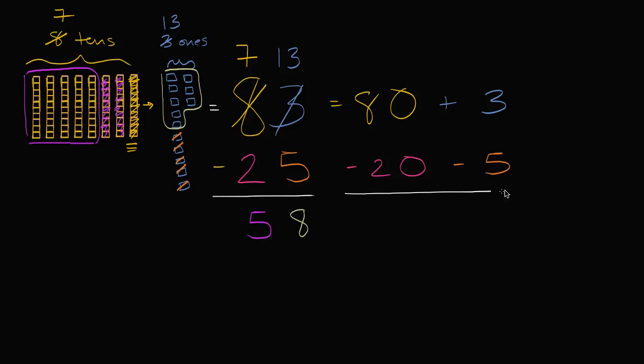We subtracted 20 and we subtracted five. When we tried to take five 1s from three 1s, well, we didn't know how to do this. Five is larger than three. So instead, we took a 10 from here, so the 80 became a 70, and we gave that 10 to the three. 10 plus three is 13.